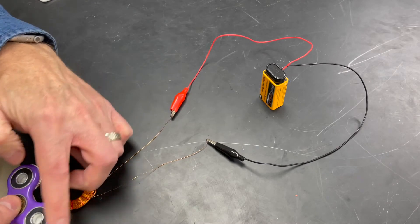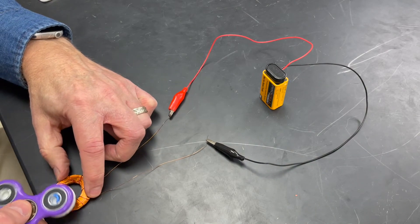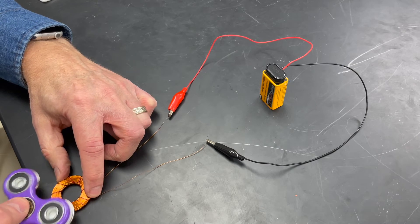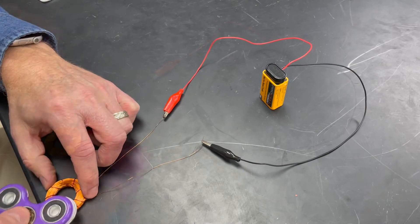Here you see a fidget spinner, and it's being repelled by the magnet, but not quite enough to make it spin.